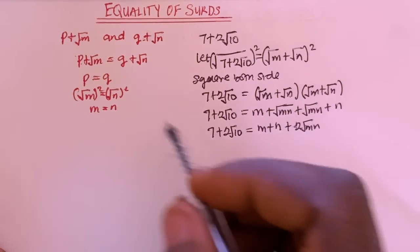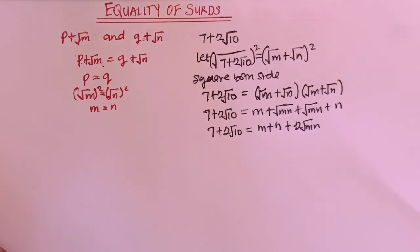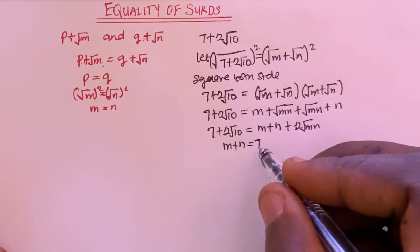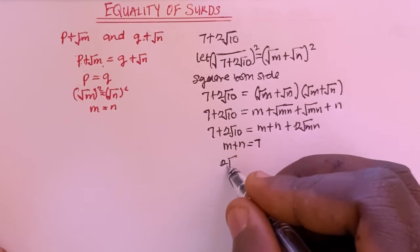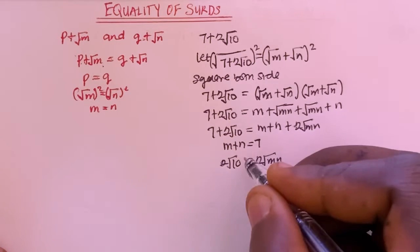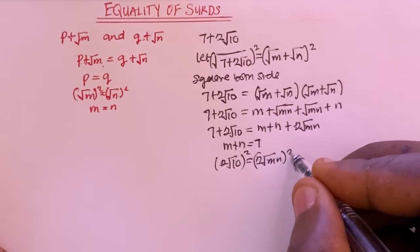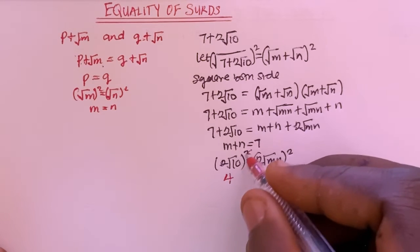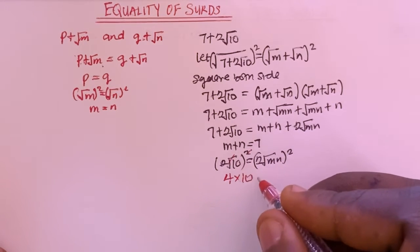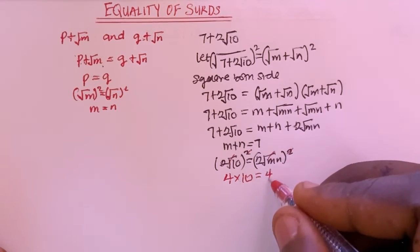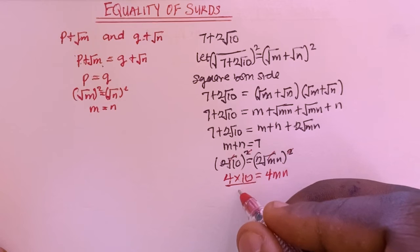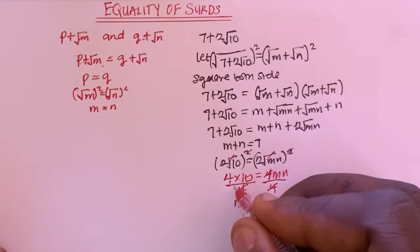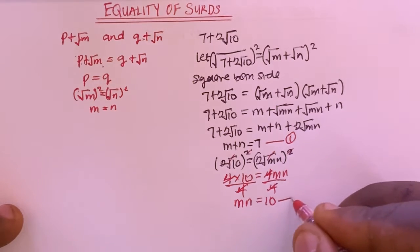This expression is exactly the same thing as the other. Now I'm going to equate them to each other. Here I'm going to have M plus N equals 7, which is the rational part. And also here I'm going to have 2 root 10 equals 2 root MN. I can square both sides of this equation, so I get 4 times 10 equals 4 times MN. Dividing both sides by 4, I have MN equals 10. Let me call M plus N equals 7 as equation 1, and MN equals 10 as equation 2.